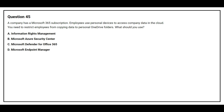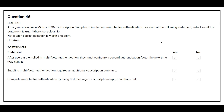Question number 45: A company has a Microsoft 365 subscription. Employees use personal devices to access company data in the cloud. You need to restrict employees from copying data to personal OneDrive folders. What should you do? Option A: Information Rights Management. Option B: Microsoft Azure Security Center. Option C: Microsoft Defender for Office 365. Option D: Microsoft Endpoint Manager. The correct answer is Option D: Microsoft Endpoint Manager.